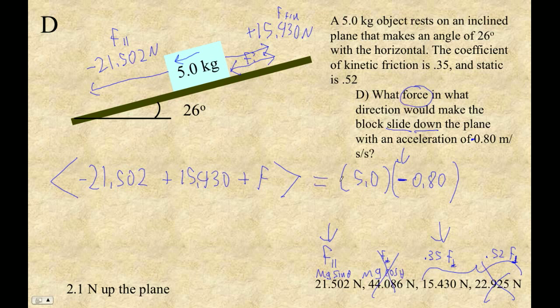So I'm just going to bust it out. So 5 times negative 0.8, plus 21.502, minus 15.430, equals 2.072.